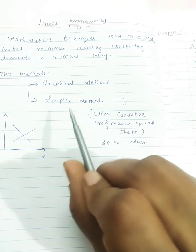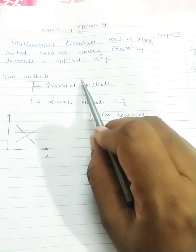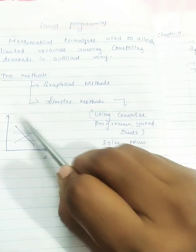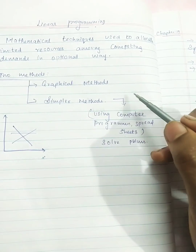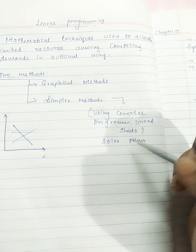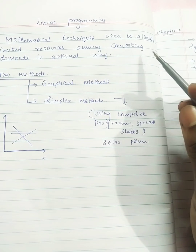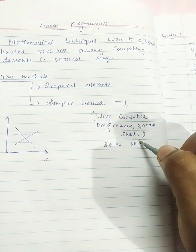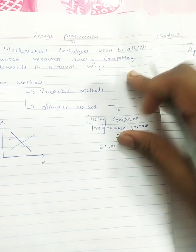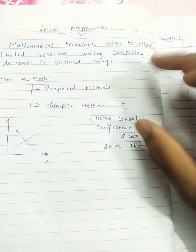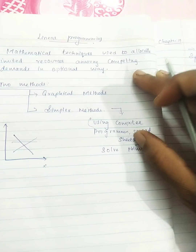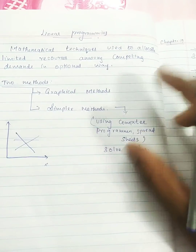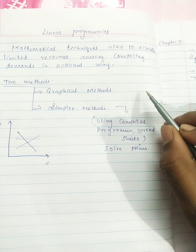There are two methods. The graphical method is a simple method — a graphical representation. The simplex method uses a spreadsheet. We are talking about the lab. This is a basic definition for linear programming. Please watch other videos for the case study.